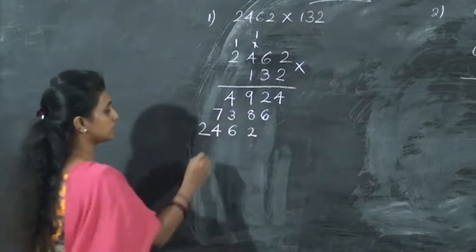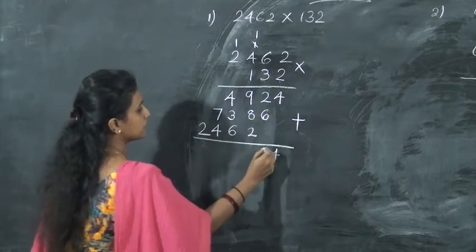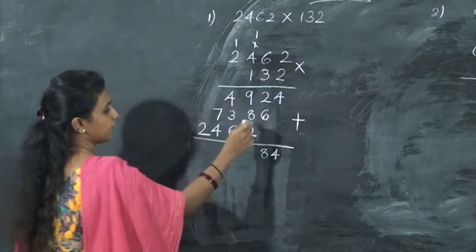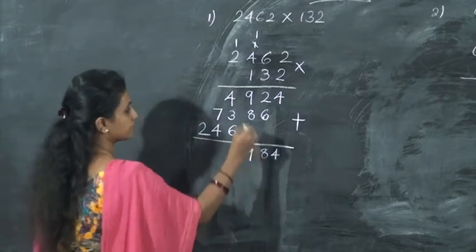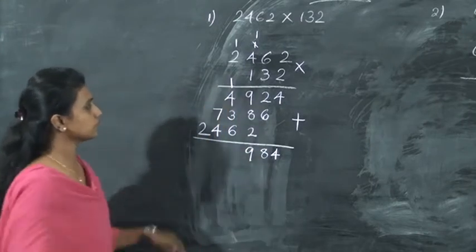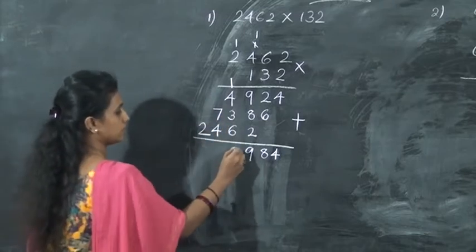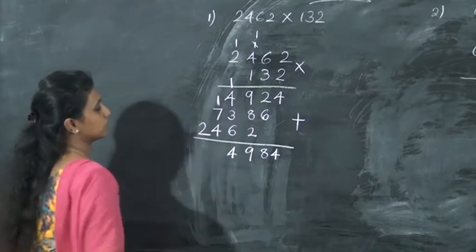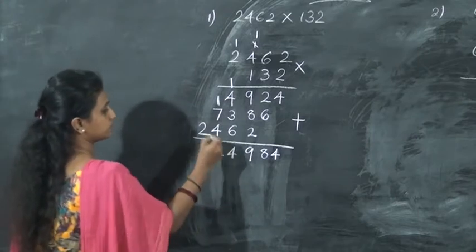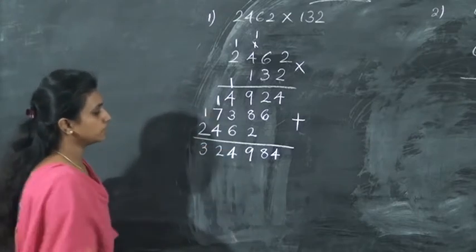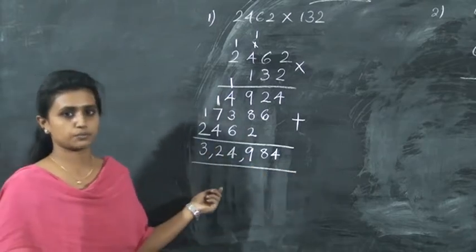Now you want to add all these numbers. 4. 2 plus 6 is 8. Then 9 plus 8 plus 2 is 19 — write 9 carry 1. Then 1 plus 4 is 5, plus 3 is 8, and that comes to 14. Then 1 plus 7 is 8, plus 4 is 12. Then 3. Put the comma — that is 3 lakhs. So 3,24,984 is the answer. Clear?